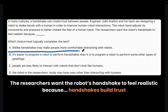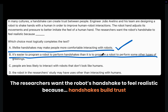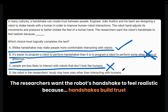Choice A says: lifelike handshakes may make people more comfortable interacting with robots. This could be true because handshakes build trust and make humans more comfortable when interacting with robots. Choice B: it is easier to program a robot to perform handshakes than it is to program a robot to perform some other types of greetings. This has not been mentioned in the text at all and is completely off topic. Choice C: people are less likely to interact with robots that don't look like humans. The text does not mention this and does not match our prediction, so this is wrong. Choice D: the robot in the researcher's study may have uses other than interacting with humans. This is completely off topic, so choice D is also wrong, which means choice A is the correct answer.